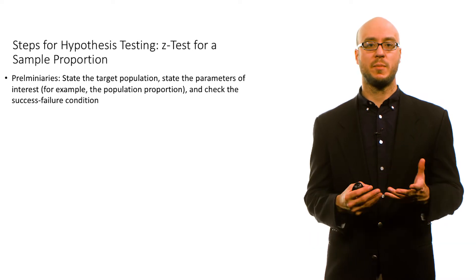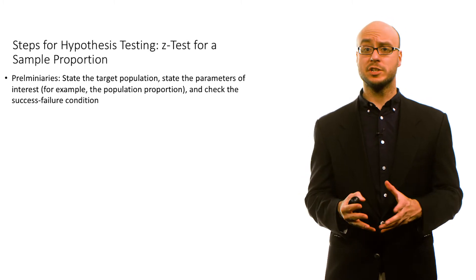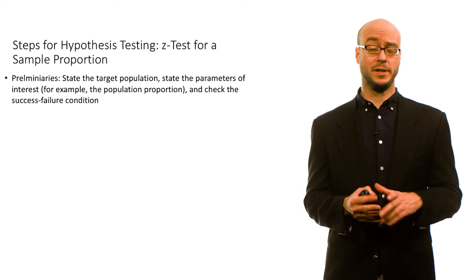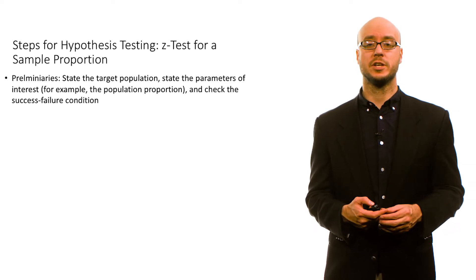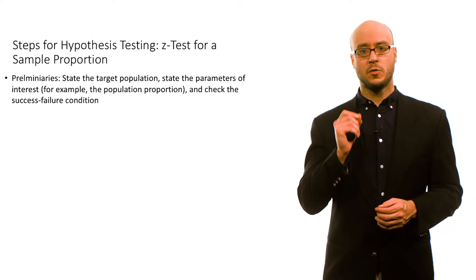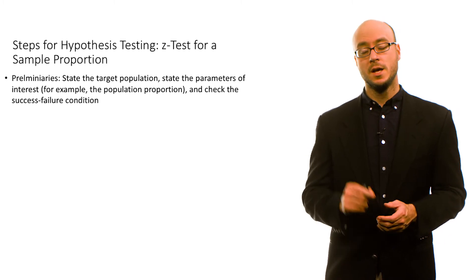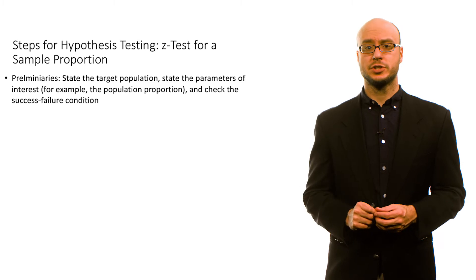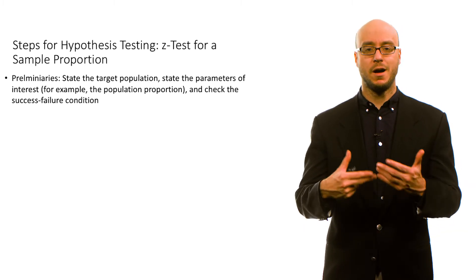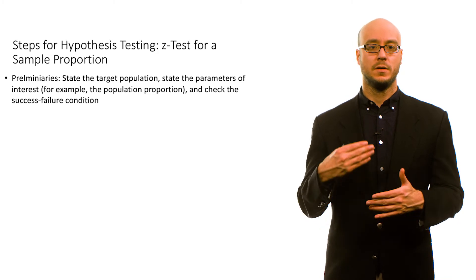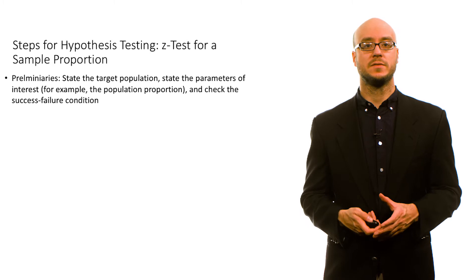Then you want to state the parameters of interest. In this case, we're interested in the population proportion, but it's always good to double-check, because maybe you're actually interested in the mean of that population. And then, when we deal with a proportion, we want to check the success-failure condition. This is an assumption about the population, but we can use our sample proportion to assess how confident we are in terms of meeting that success-failure condition.